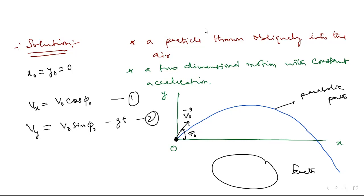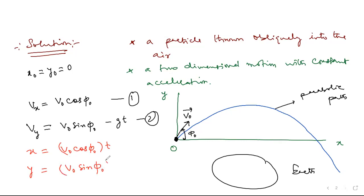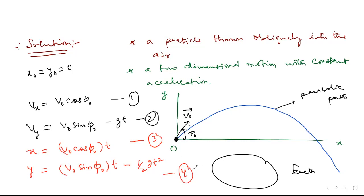The position equations are: x = v0 cos(phi0)·t, and y = v0 sin(phi0)·t − ½gt². These four equations are called the equations of motion of a projectile.